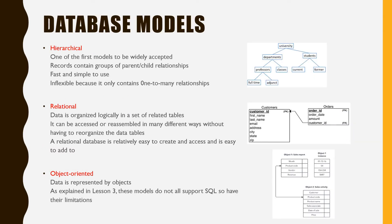Let's look at various database models. The specification describing how a database is structured and used is known as a database model. First, let's look at hierarchical models. These are one of the first models to be widely accepted and used. Records contain groups of parent-child relationships similar to a tree structure. This model is fast and simple to use, but inflexible because it only contains one-to-many relationships.